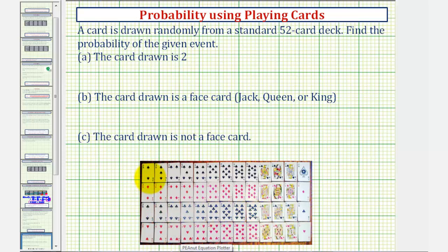And there are 13 ranks, or 13 types of cards. We have the 2s, 3s, 4s, 5s, 6s, 7s, 8s, 9s, and 10s.